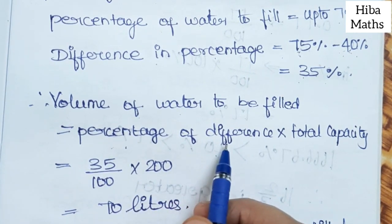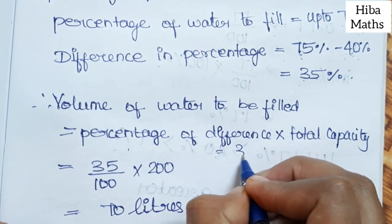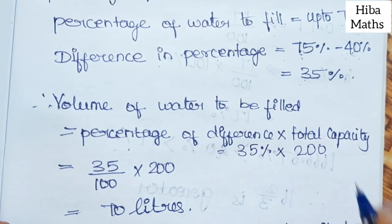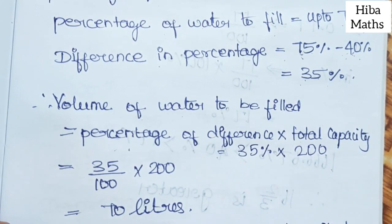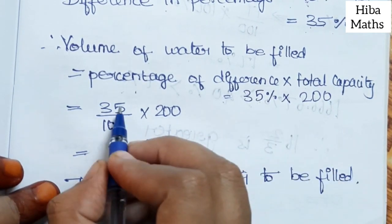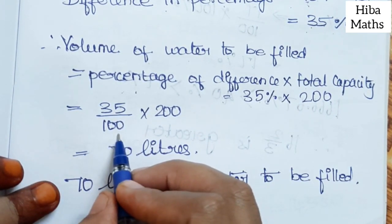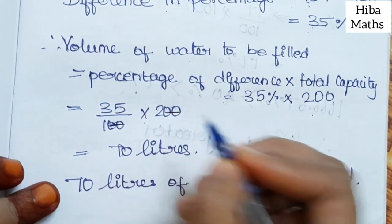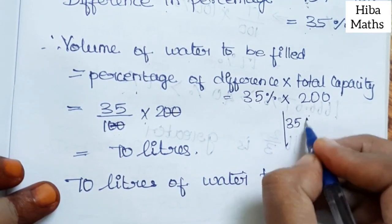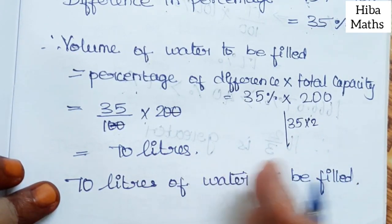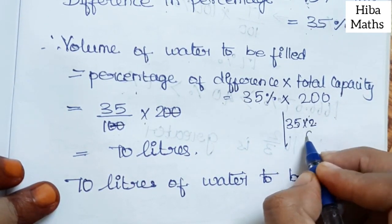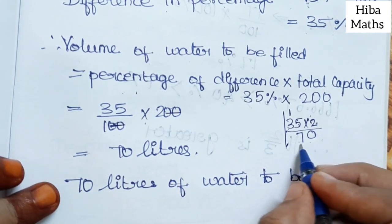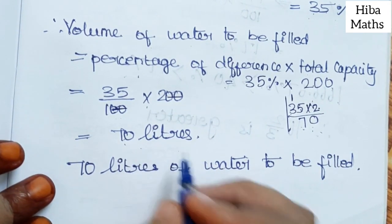The percentage difference is 75% minus 40% = 35%. Volume to be filled = 35/100 × 200 = 70 liters. So we need to add 70 liters of water to fill the tank to 75%.